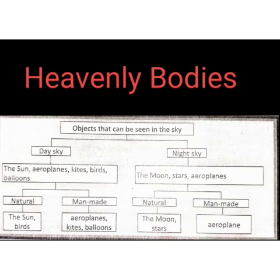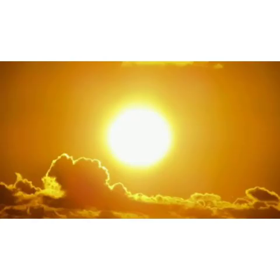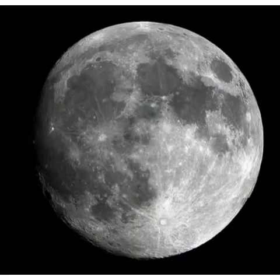But all the objects listed above cannot be termed as heavenly bodies, because heavenly bodies are further classified as non-living natural bodies — such as the sun, stars, and moon — that exist outside the earth's atmosphere. Such bodies are called heavenly bodies.